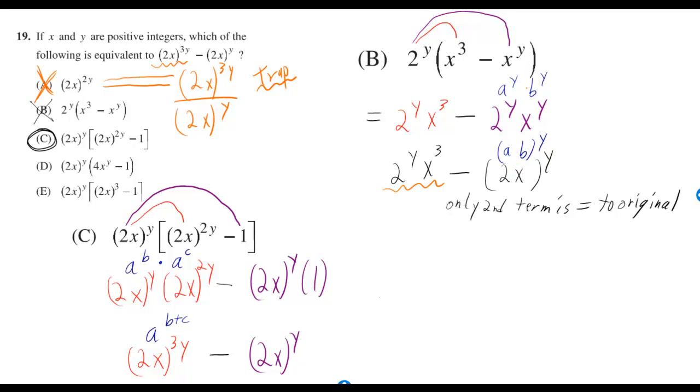And I put the rule for why that works. If you have a to the y times b to the y, then that's always ab to the y, and you can see in this case a is 2 and b is x.